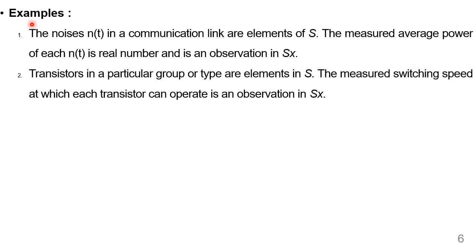Let us take two practical examples. In electronics and communication, the noise signals in a communication link are the elements of the sample space X. The measured average power N(t) is a real number and is an observation. Similarly, transistors in a particular group are elements in a sample space, and the measured switching speed at which each transistor can operate is an observation.